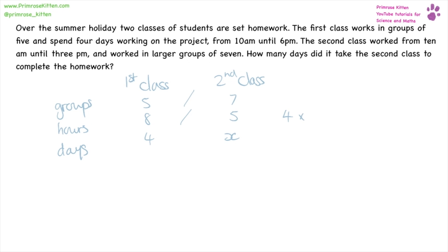Four days times the size of the groups, four days times the number of hours. Putting that all together gives us an answer of 4.5 days.